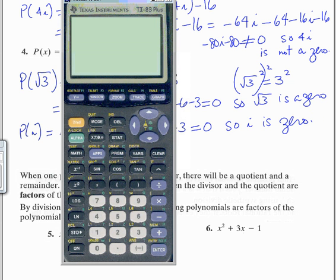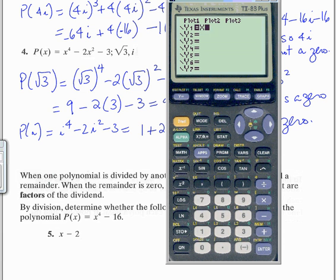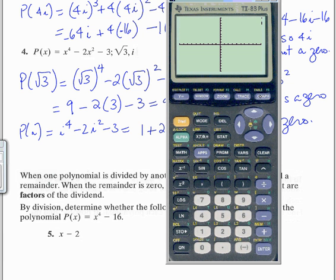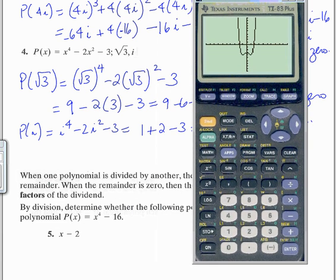Now let's graph this. Press y equals and delete what we had there. Enter x to the 4th power minus 2x squared minus 3, then press graph. This is an x to the 4th function, so it's going to go up on both ends, similar to x squared. It has two real zeros, as you can see — one of them is negative √3 and the other one is positive √3.